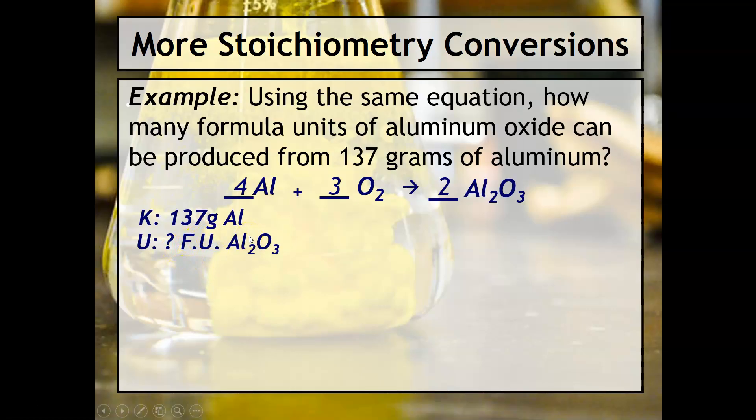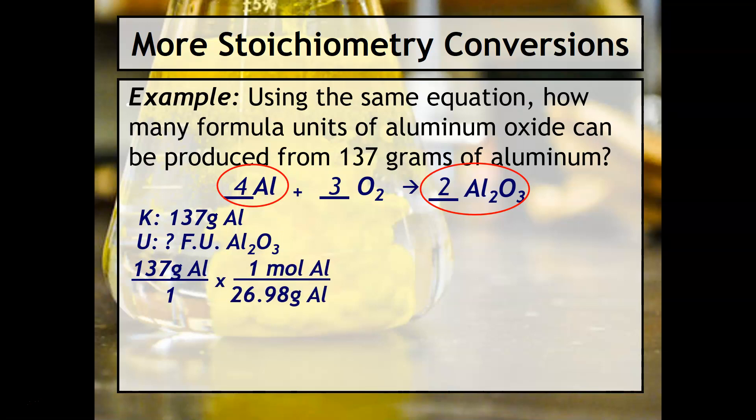Our ratio now is going to change, it's going to be between the aluminum and the aluminum oxide. We'll take our known and put it over one again. We have to convert from mass into moles using the molar mass. And then the second step is always the mole ratio - this ratio is again between the aluminum and the aluminum oxide.